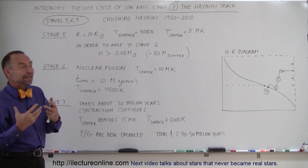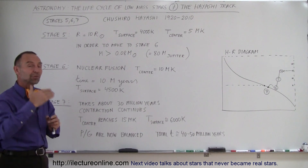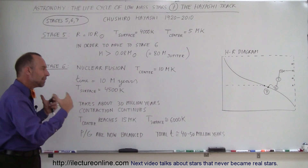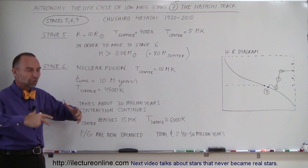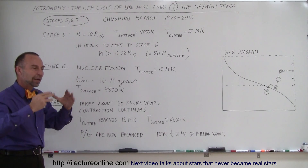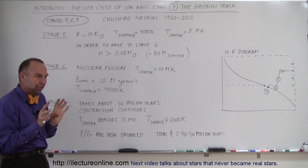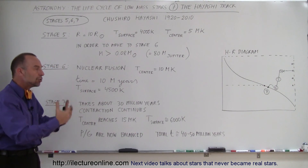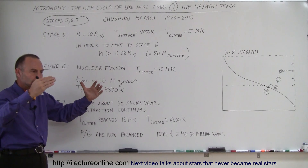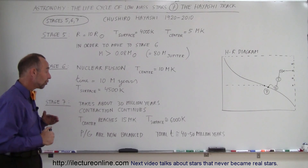It takes 30 million years from stage 6 to stage 7. When the star begins nuclear fusion, it takes another 30 million years to become a bona fide main-sequence star, because so much heat is being generated that pushes back against gravity that the continual collapse is now very, very slow. Very slowly, a balance is being formed between gravitational force pulling inward and the force of radiation pressure produced by nuclear fusion, along with pressure from the heat generated in the core. Reaching that balancing point takes 30 million years, and contraction continues throughout.